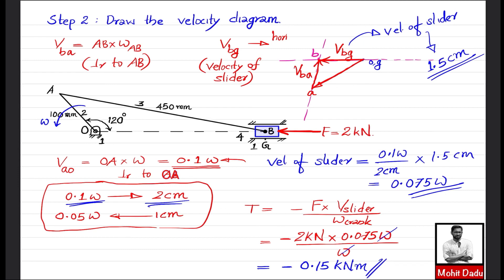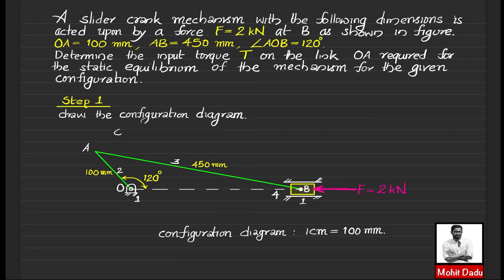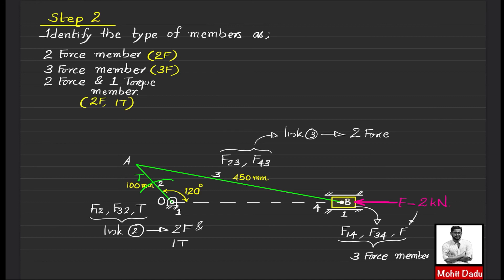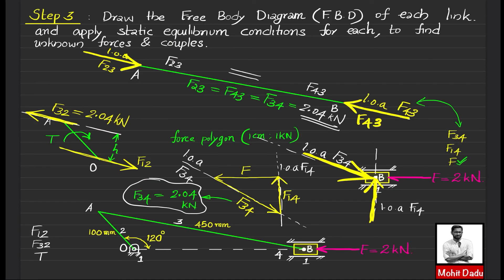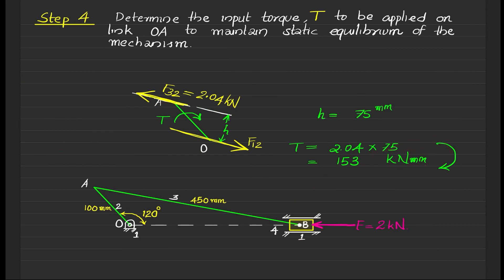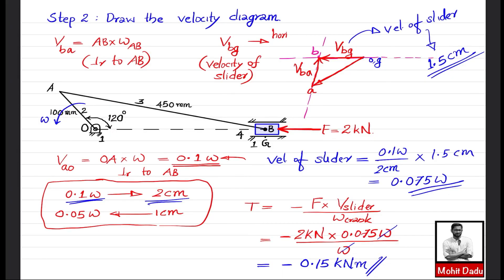Comparing with the earlier graphical method solution — which required constructing a configuration diagram, identifying two-force and three-force members, drawing free body diagrams for all links, and evaluating forces — that method gave T = 153 kN·mm = 0.153 kN·m. The Principle of Virtual Work yields essentially the same result (0.15 kN·m) much more efficiently, without drawing free body diagrams or computing internal link forces. Thanks for watching.